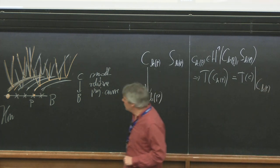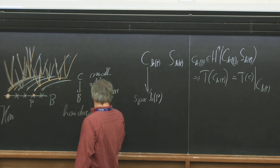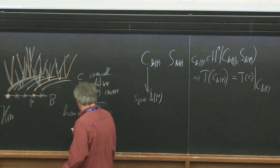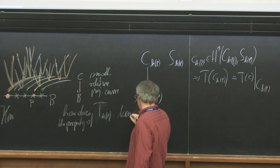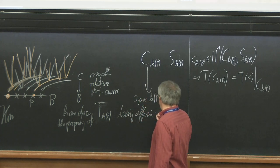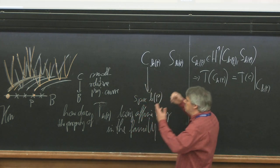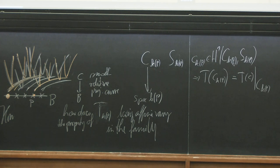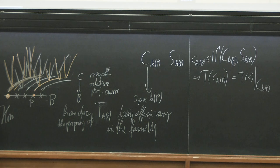So everything fits well together. The question is: how does the property of the torsor at point P — being affine or not affine — vary in the family, in the deformation? We have a family of curves and a family of torsors, and we want to know how this property behaves when we vary the family. We will see two instances of this question which are directly related to tight closure questions.